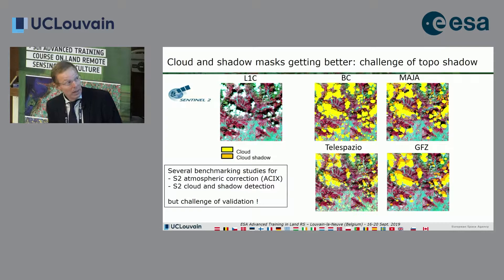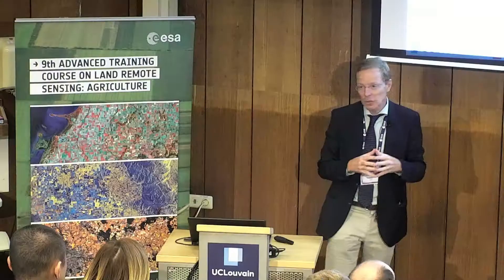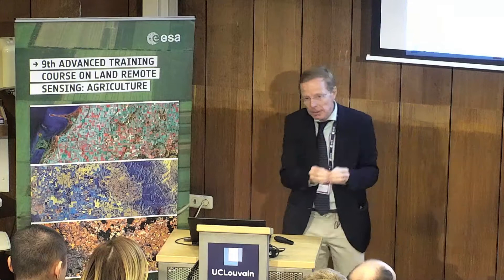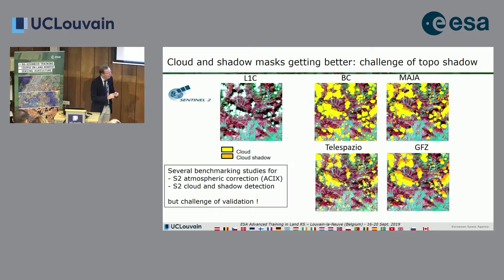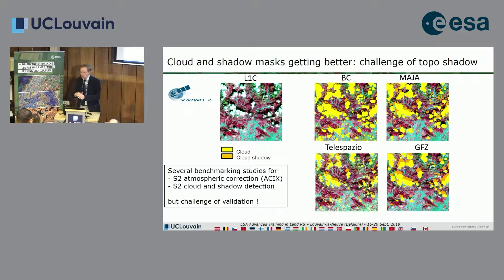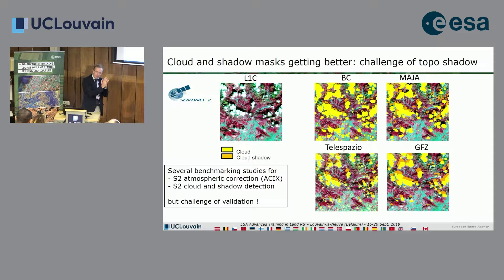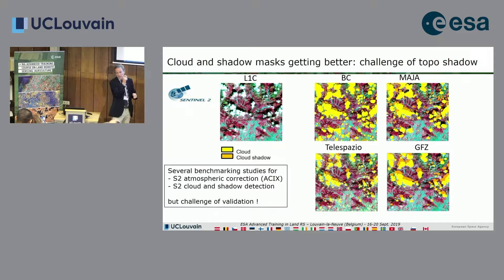The atmospheric community conducted a major benchmarking study called ACIX, where any player could assess the quality of surface reflectance retrieval — mainly aerosol correction but also water vapor and ozone correction. Results are available but cloud screening was not evaluated. Now, organized by NASA, part of ESA, and European colleagues, another benchmarking including cloud screening and cloud shadow screening is underway, but results are not yet known. An algorithm beating others in benchmarking is not necessarily suitable for operational processing due to computational cost.